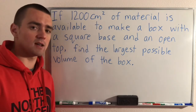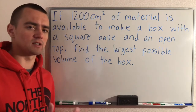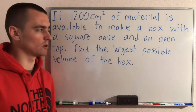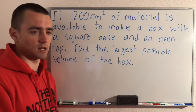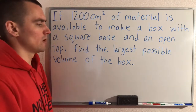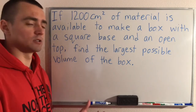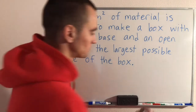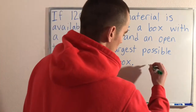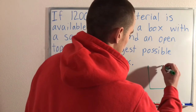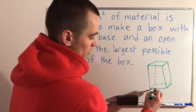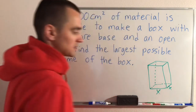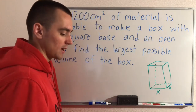Actually coming up with the equation for that is going to be kind of tough if you don't know really what we're looking at. So what I'm going to start with is drawing a sketch of what we're dealing with. We know that we are using this material to construct a box with a square base and an open top. We know that our base is a square, so this side and this side are both going to be the same length — we can just call that x.